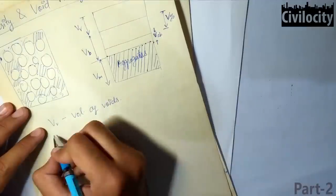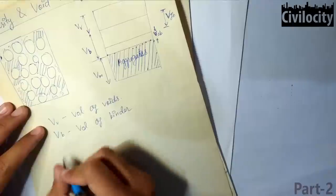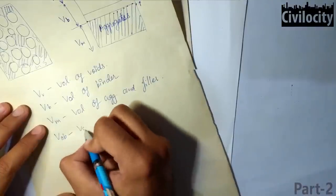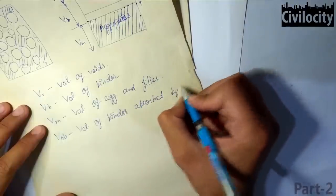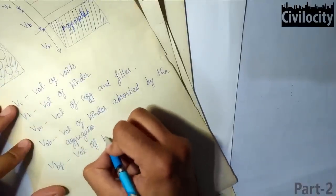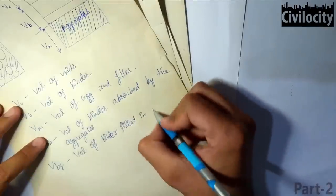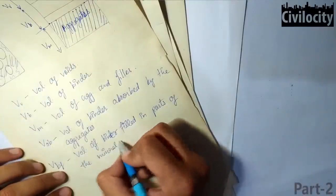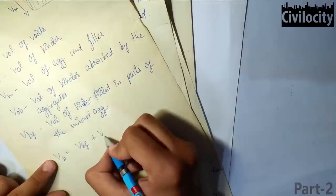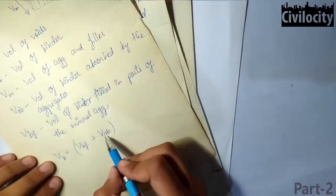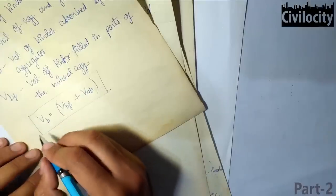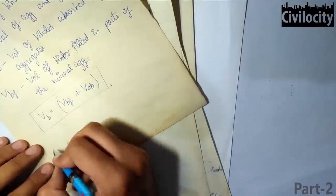Let us write all terms down: Vv is volume of voids; Vb is volume of binder; Vm is volume of aggregates and fillers; Vab is volume of binder absorbed by the aggregates. Therefore, Vb equals Vfb plus Vab — the total volume of binder is the sum of the volume filled between aggregates and the volume absorbed by aggregates. If there were no binder, how would you calculate total voids in the specimen?